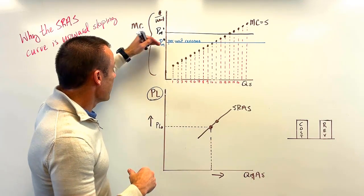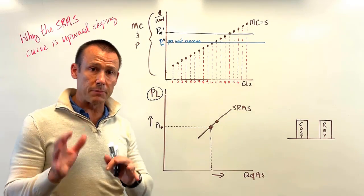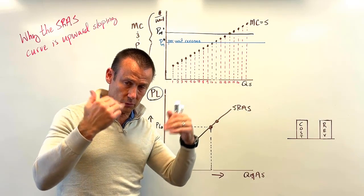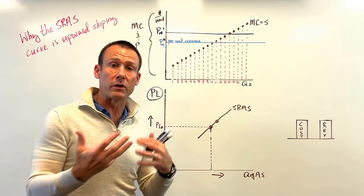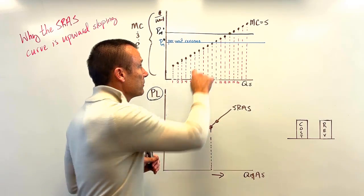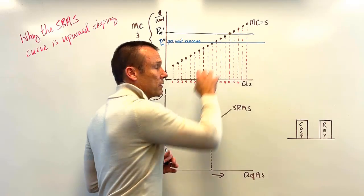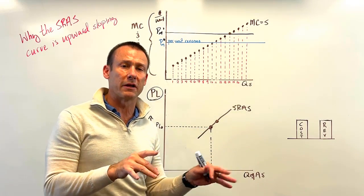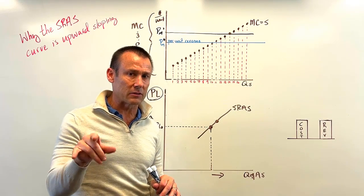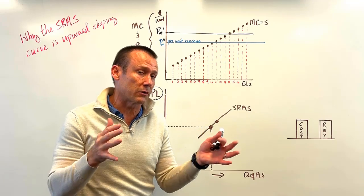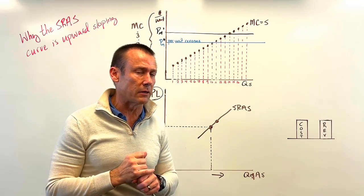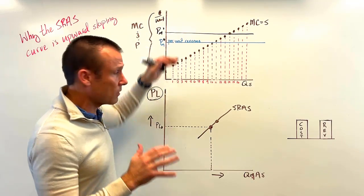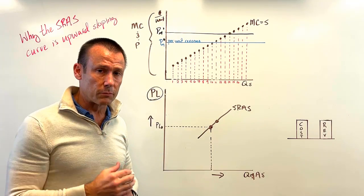The big point is: price — a benefit to the supplier — goes up, the per-unit revenue goes up, and we're going to supply more. You can see that movement along the curve, which relates to supply curve shifting. For right now: price goes up, we're producing more.